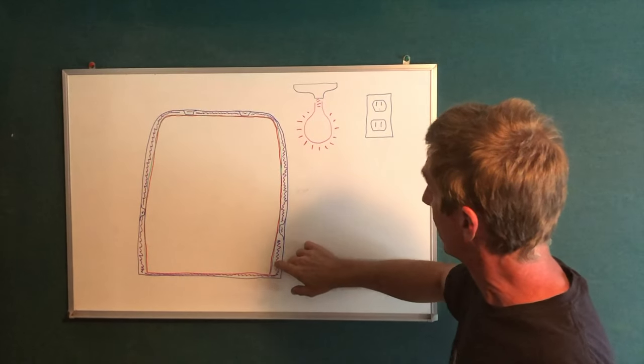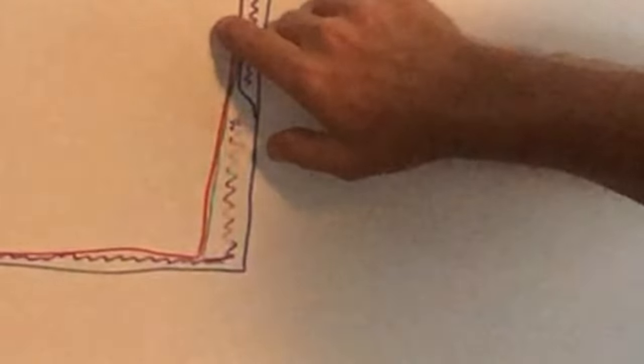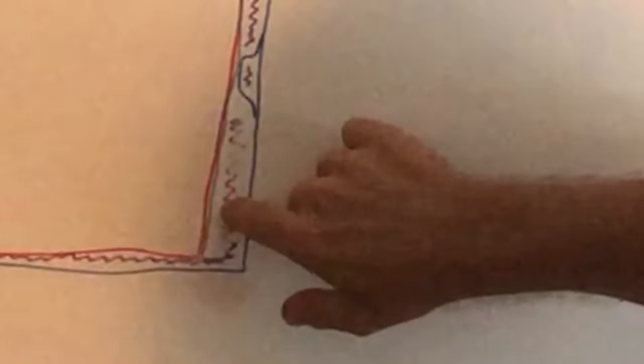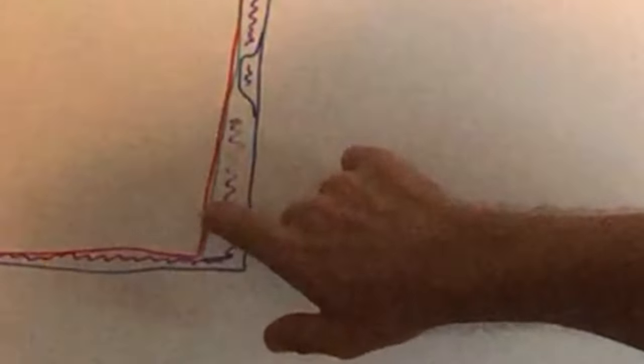But now vapor barrier, green line right there against the red line, right against that inside wall. If you're going to put a vapor barrier in, that's where it needs to be.